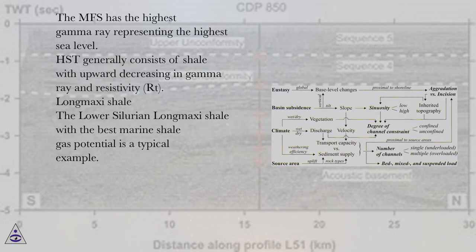The MFS has the highest gamma-ray representing the highest sea level. HST generally consists of shale with upward decreasing gamma-ray and resistivity (RT).